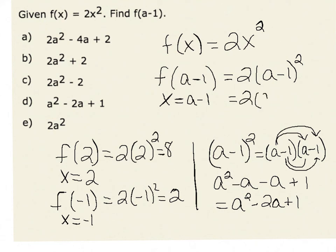as a squared minus 2a plus 1. Therefore, f of a minus 1 is equal to 2 times a squared minus 2a plus 1. Again, using the distributive property, this is equivalent to 2a squared minus 4a plus 2.